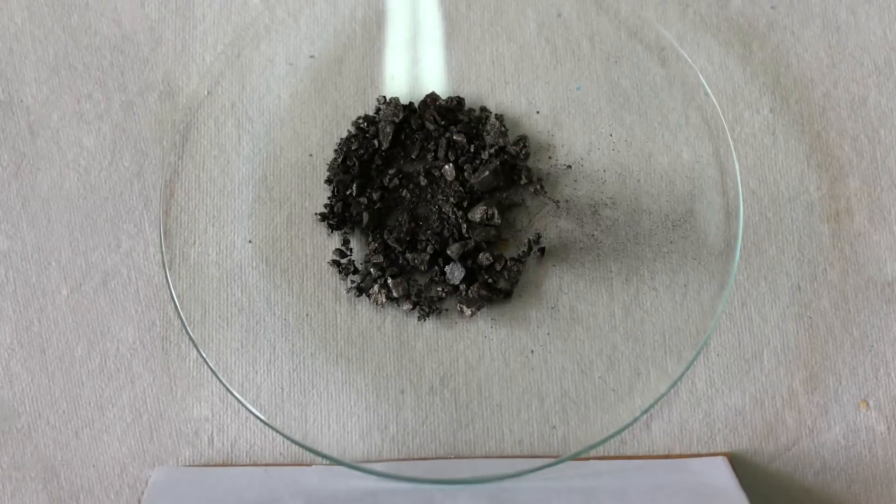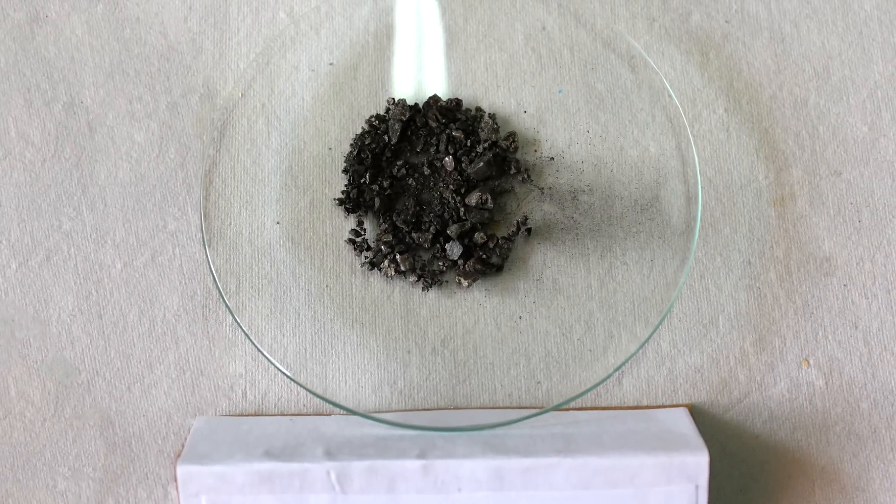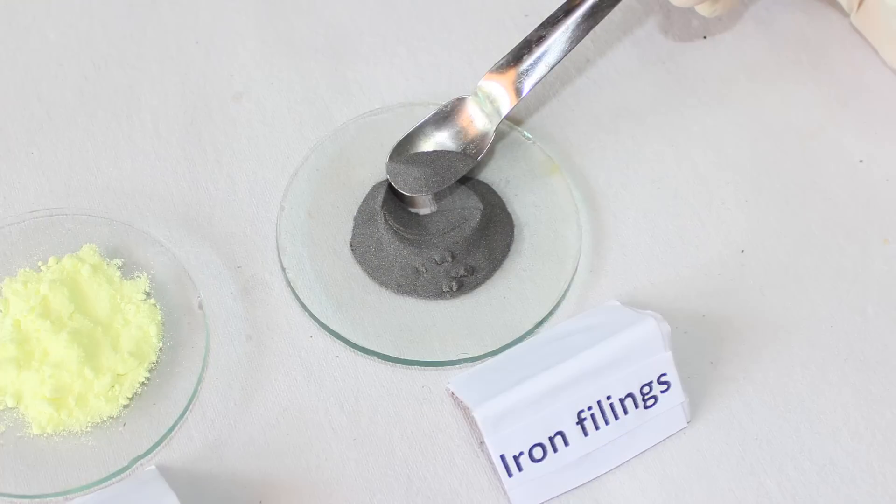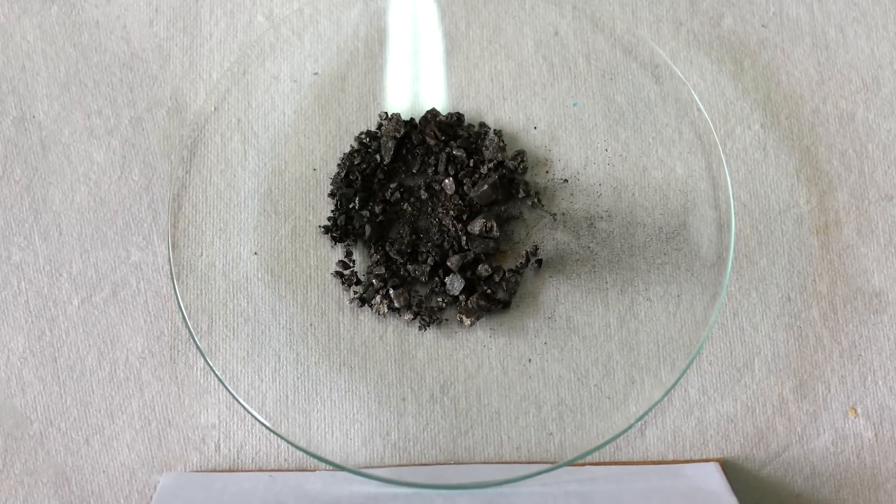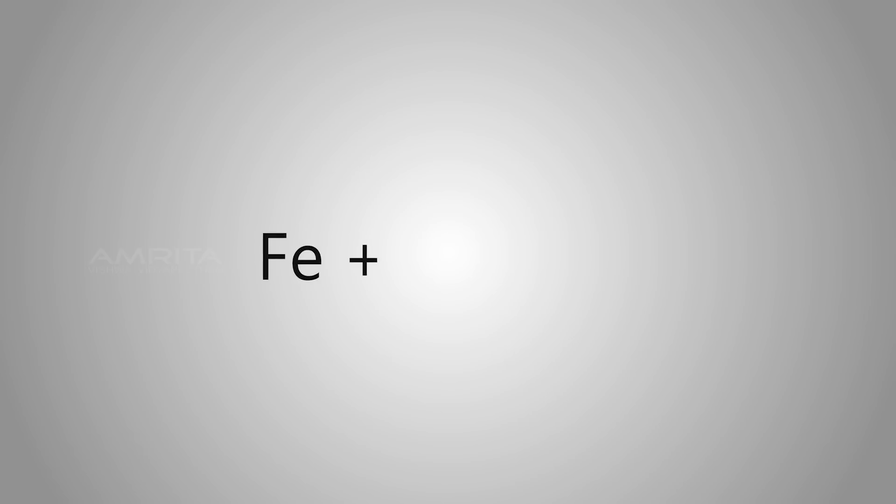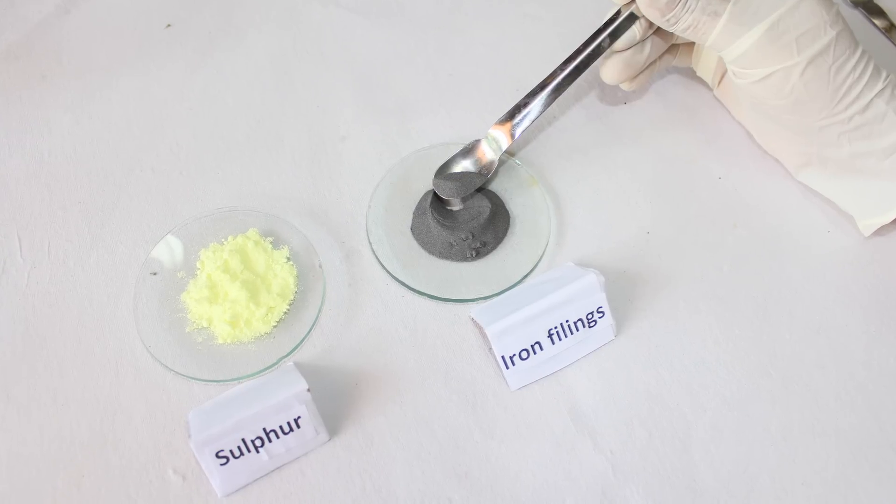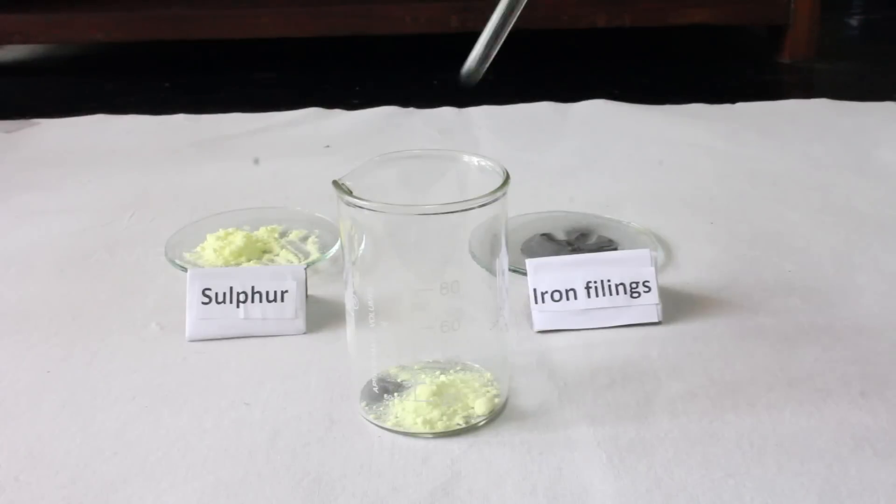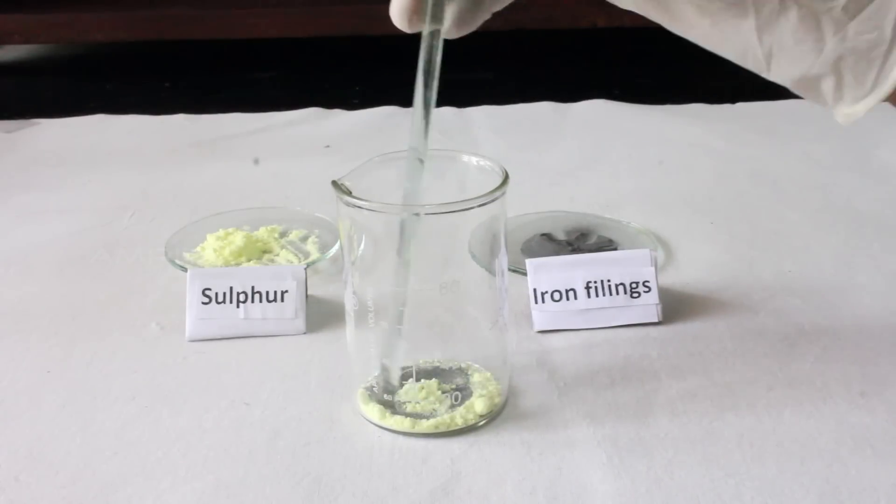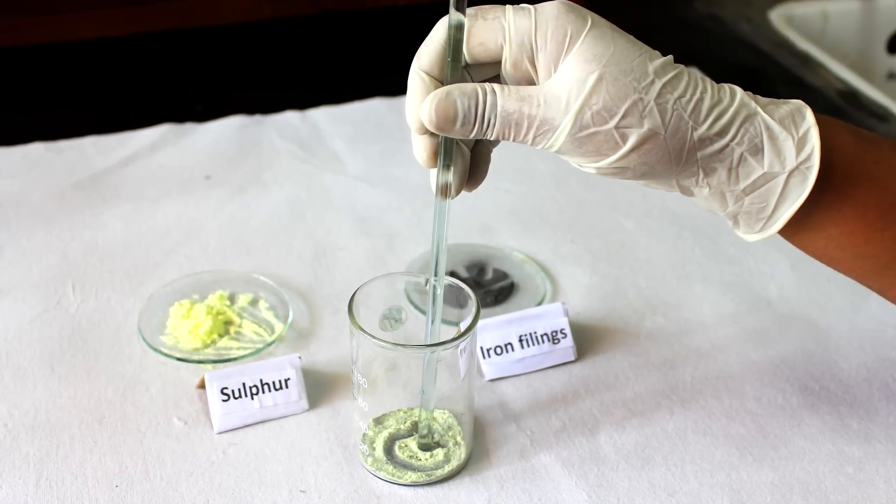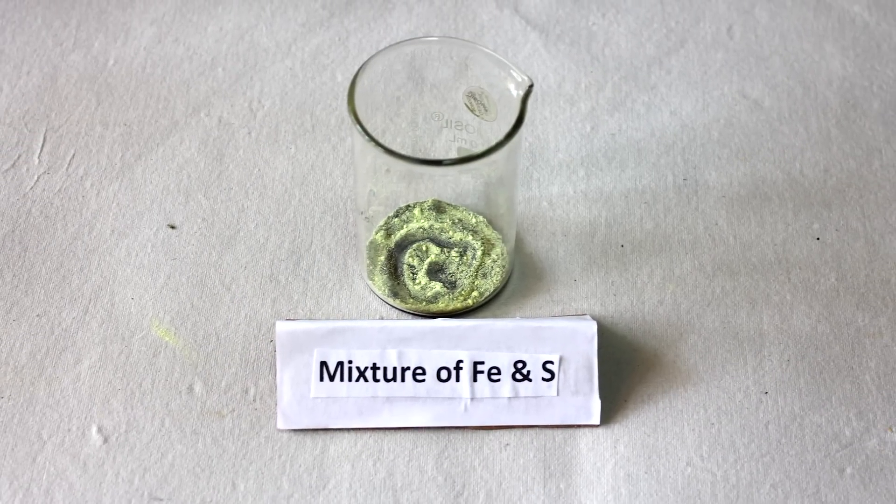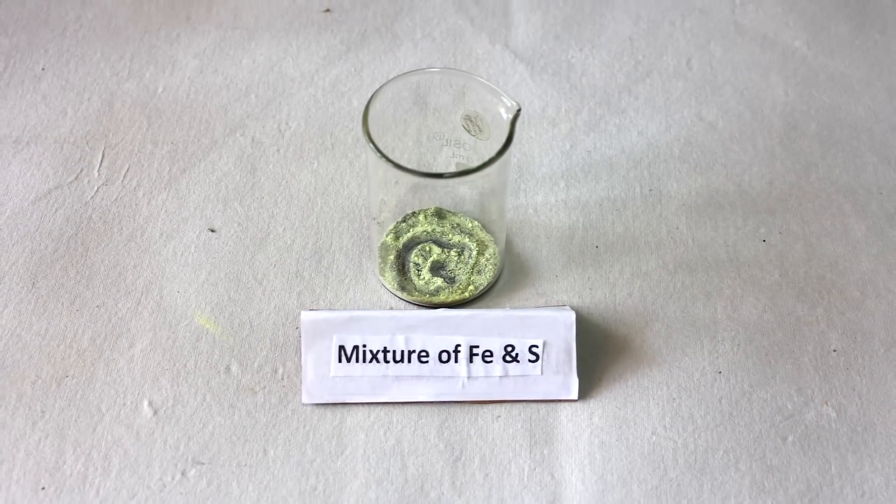Procedure. Here we take ferrous sulphide, which is a compound of iron and sulphur to do the experiment. Upon strong heating, iron is combined with sulphur to form ferrous sulphide. Now, take a mixture of iron and sulphur in a beaker and mix the contents in it using a glass rod. After mixing, we can see the yellow coloured sulphur powder and iron filing separately.